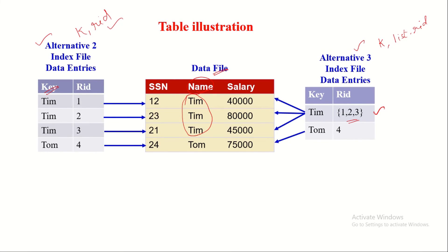Following those record ID locations leads to the actual records with the matching search key value. This demonstrates that when an index is created following alternative three, each entry's size is smaller than those created following alternative two — making alternative three more space-efficient.